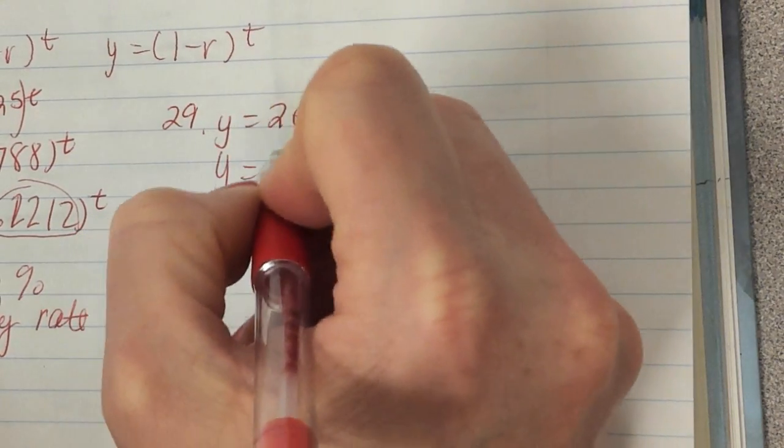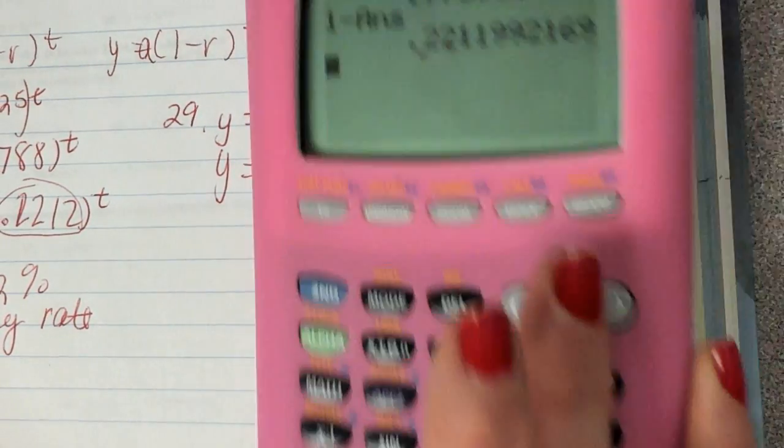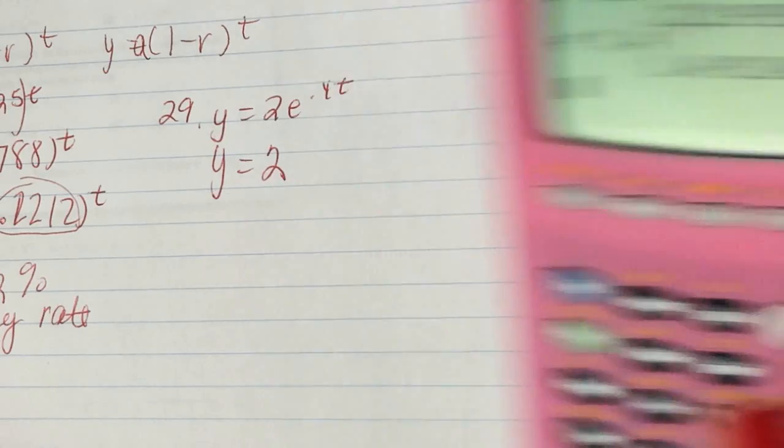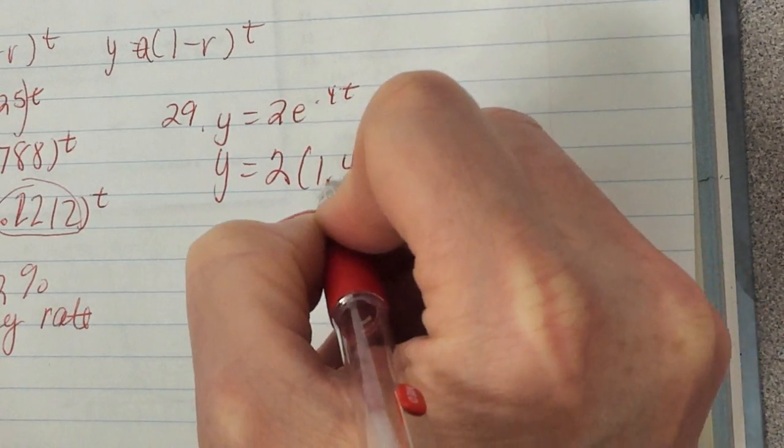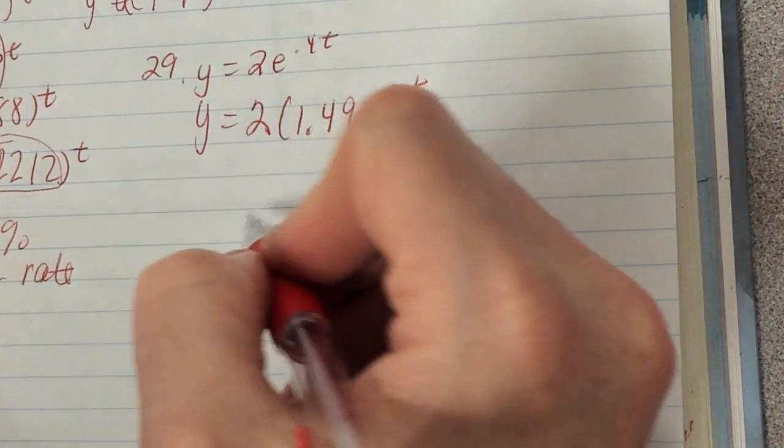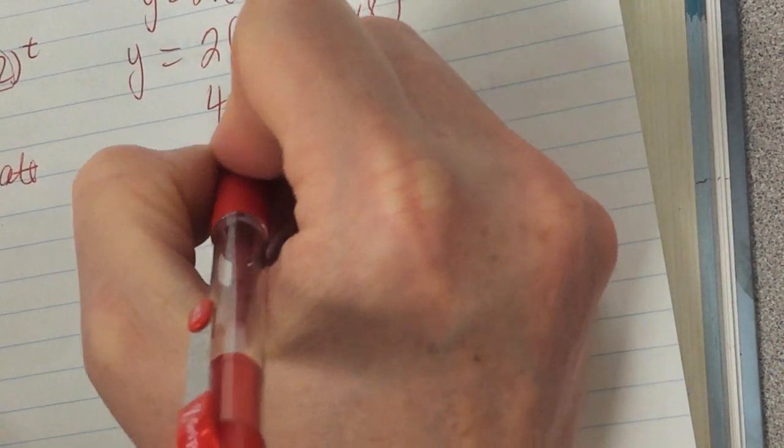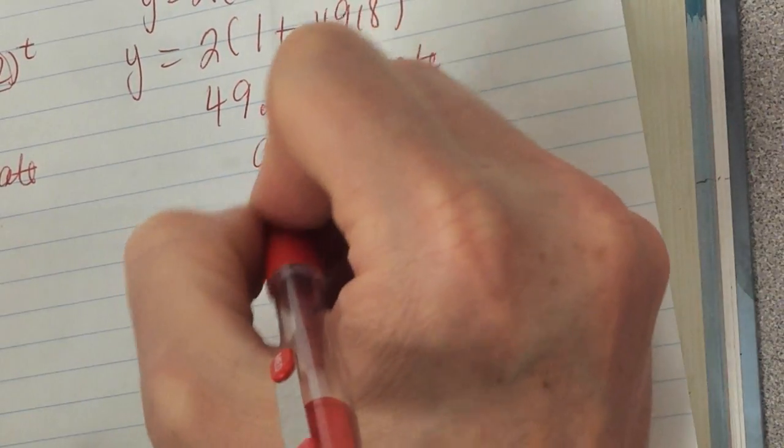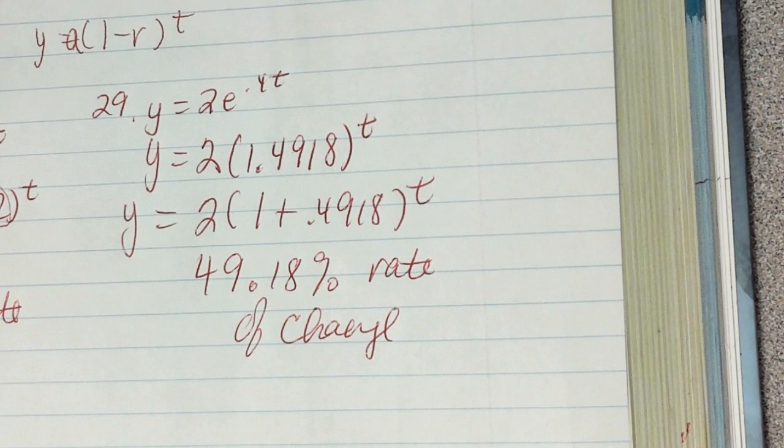For this one, we already have our A value. So, I said you could leave the A there. So, the A is fine. But I have to get rid of that .4. So, I have to do E raised to the .4 gives me 1.492. I'll pick it up four decimal places to the T. So, now rewriting that, that's going to be Y equals 2, 1 plus .4918 to the T. And so, that's going to be a 49.18 percent rate of change. Okay, makes sense. Anything else? Okay, good job. Let's hold it back.